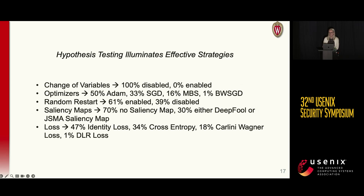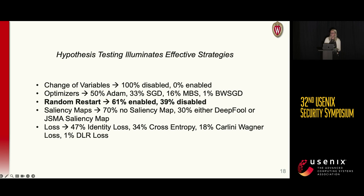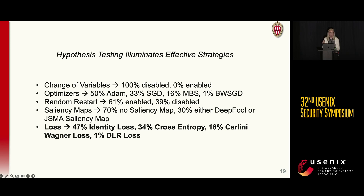Here I'll just show a couple of interesting trends that we found from our hypothesis testing. One of my favorite parts of this experiment was that we were actually able to validate and confirm the validity of some commonly held best practices for making good attacks. In one example, we saw that random restart did indeed help, supporting common claims that people have used for how to make good attacks. We saw that 61% of the statistically significant hypotheses that we investigated were in favor of using random restart. We also got to uncover some new interesting and somewhat unexpected trends. For example, looking at the loss component, we saw that identity loss was actually the most favored loss function, even beating out cross-entropy loss by a whopping 13%. I'll remind you that identity loss here is the same as using no loss at all.